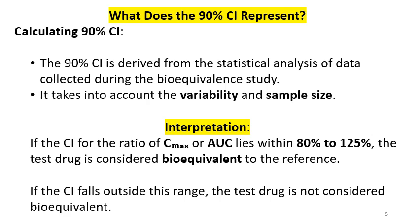How is the 90% CI calculated? The 90% CI is derived from the statistical analysis of data collected during the bioequivalence study — namely the plasma concentration data. It takes into account the variability and the sample size, so it is a statistically data-based value.